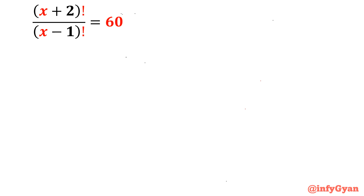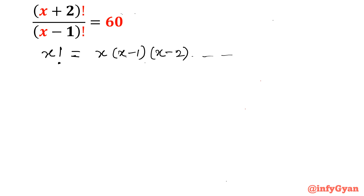If you want to see how we can solve this, you should be aware of what factorial is and how it will be written. x factorial, if you want to write the factorial of x, that value will be x times (x-1) times (x-2) up to 1. For example, if you are writing 4 factorial, that means you have to multiply all the numbers from 1 to 4.